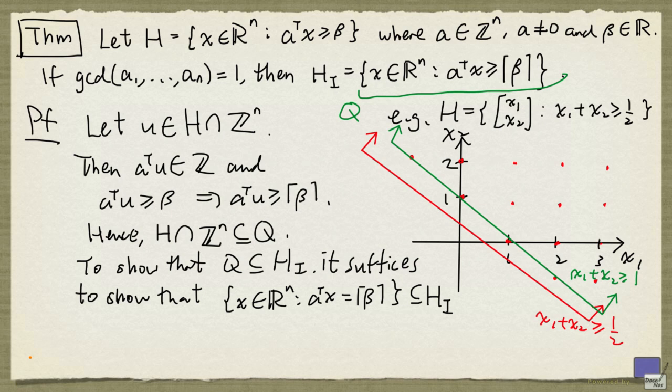So what this is saying is that if we look at this example here, in order to show that Q is a subset of H_i, all we need to show is that the points on the boundary here, which is a hyperplane, is a subset of H_i. And the reason is as follows. Suppose we pick an arbitrary element that satisfies this green inequality, and we want to show that this point is also in H_i.